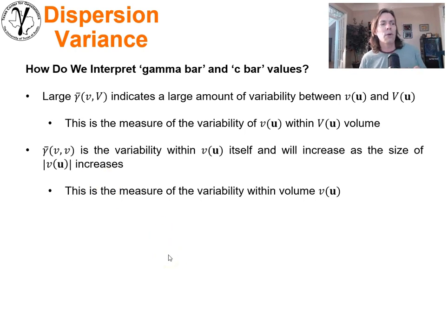Now how do we interpret a gamma bar or c bar value? First of all, if you have a large gamma bar little v big V, that indicates a large amount of variability between the volume little v and big V. So it really is a measurement still of the variability between the two volumes. What's very interesting is the gamma bar approach is completely general. In fact, you can do gamma bar little v little v between a volume and itself.